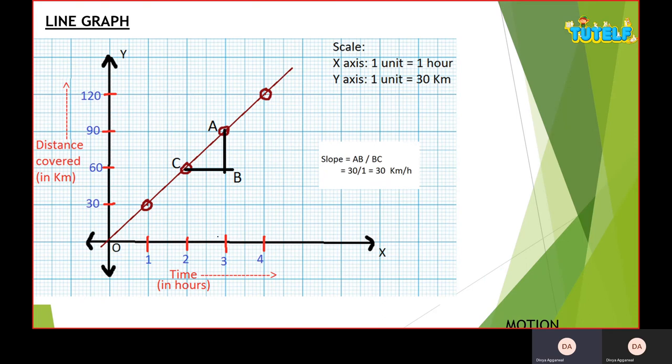Now we can find slope from this. Slope basically is the interval of y-axis divided by interval of x-axis. I will make a straight line from A to the bottom, and C also makes a perpendicular. The slope is y-axis divided by x-axis. So y-axis is A to B and x is B to C. The value is 30 kilometers divided by one hour, so it would be 30 kilometers per hour.